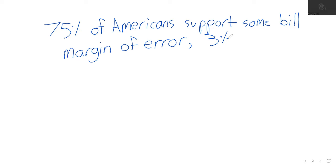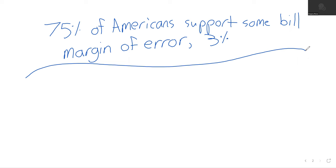And the question of how we get these margins of error is a question for a statistics course. It's not something we want to talk about here. What we do want to talk about is taking a statement like this and expressing it as an absolute value inequality. And we've got this kind of formula here.